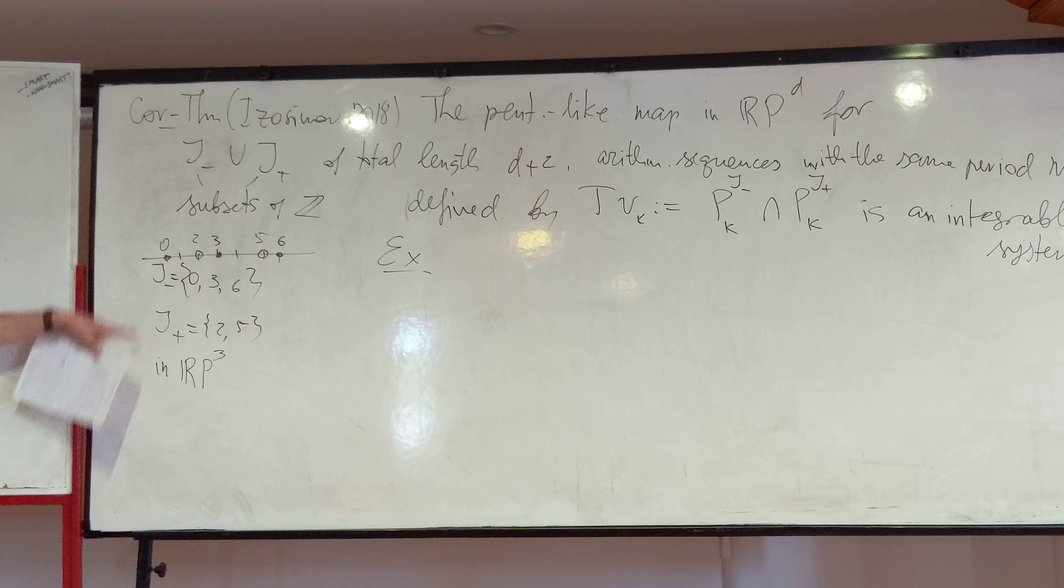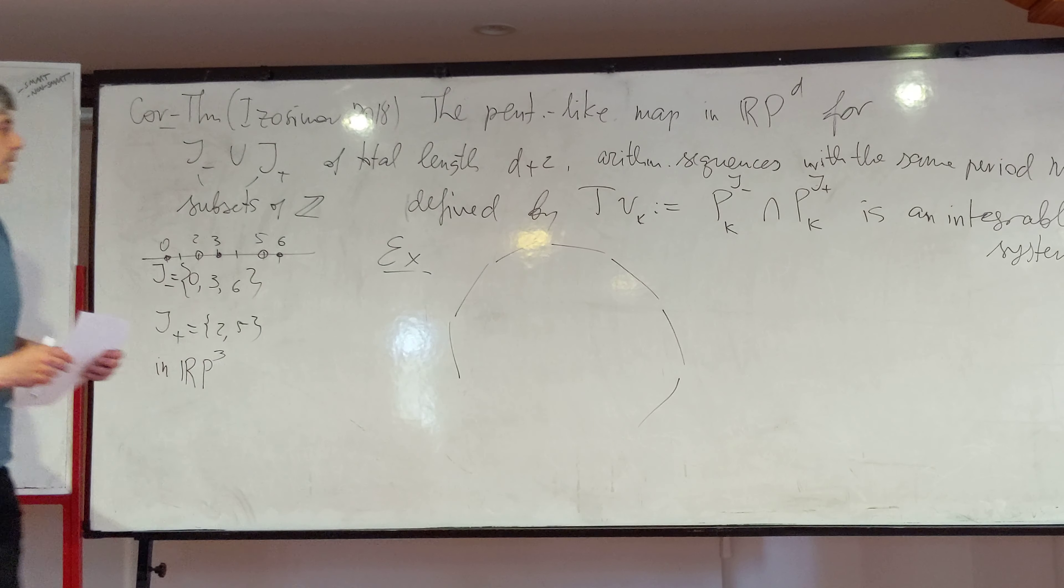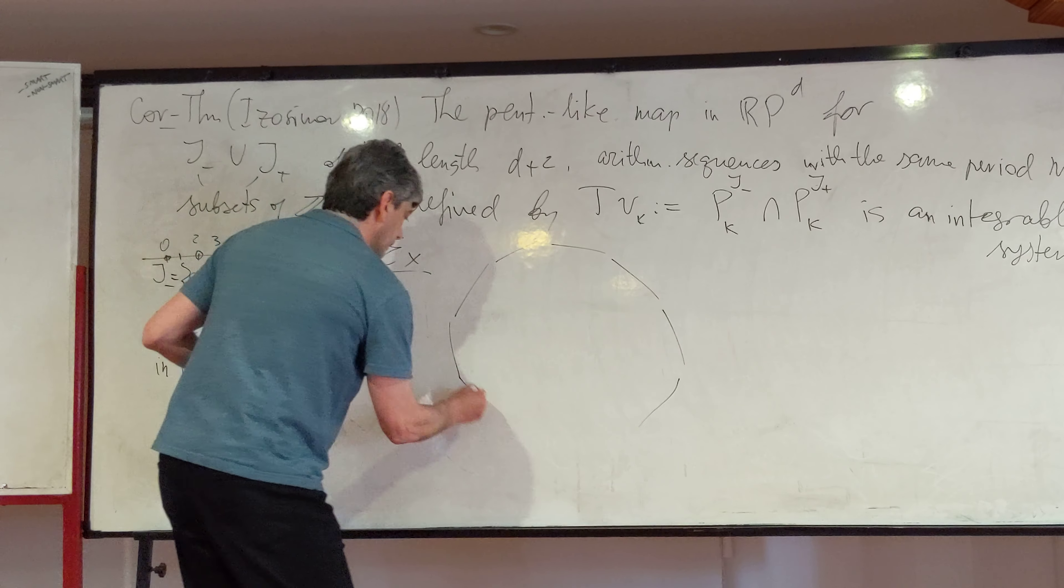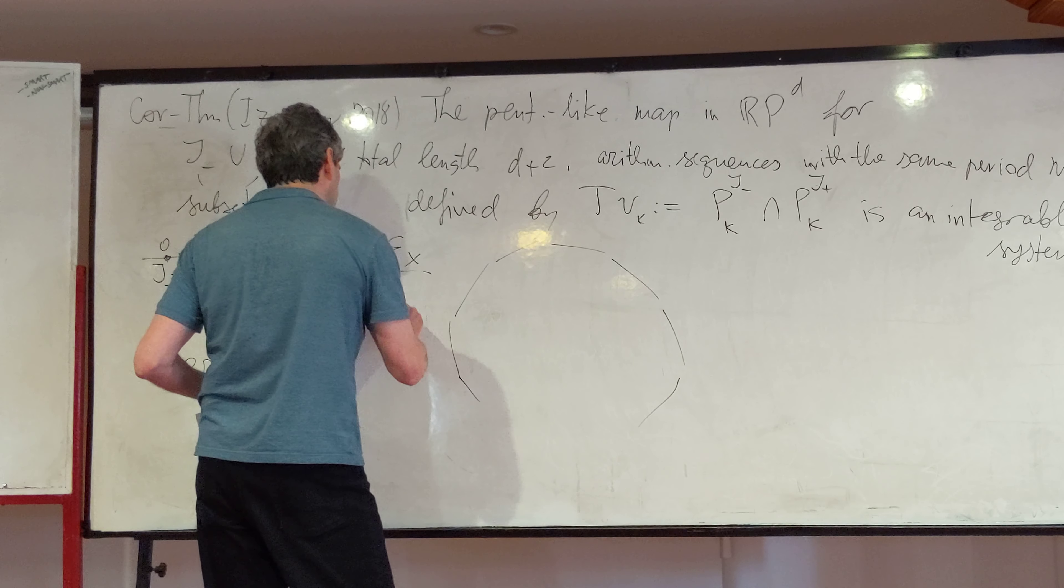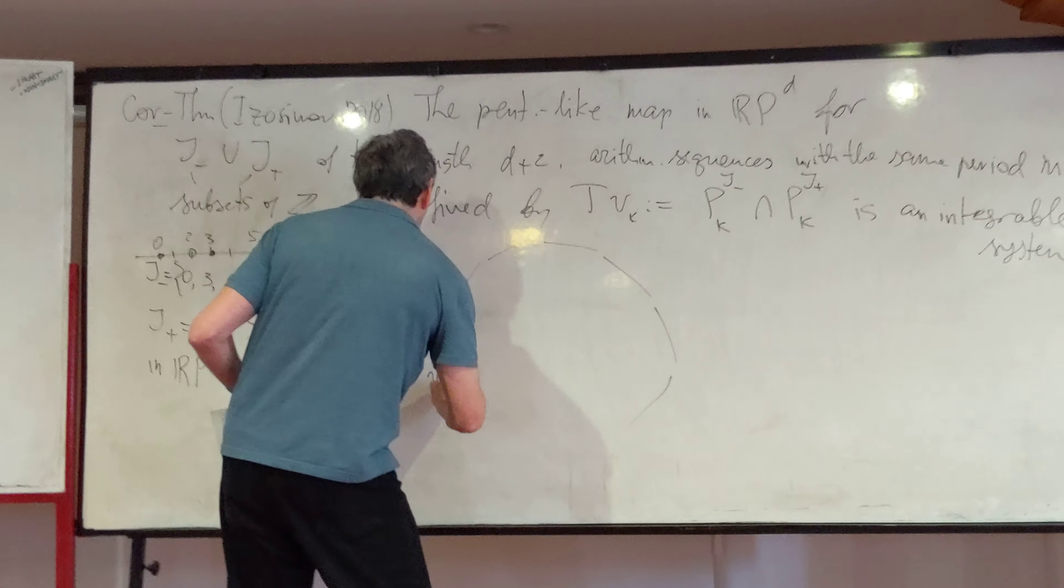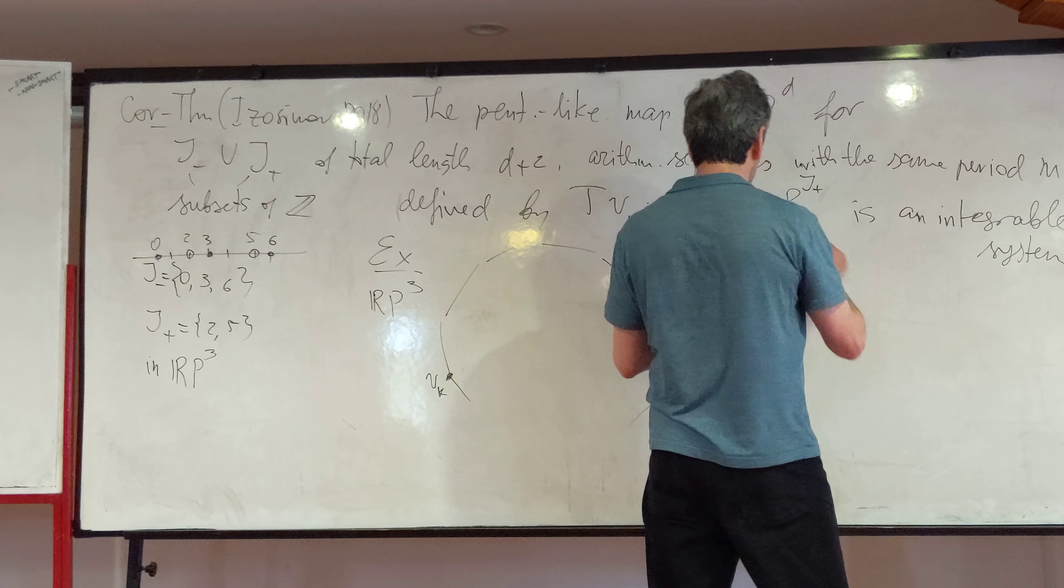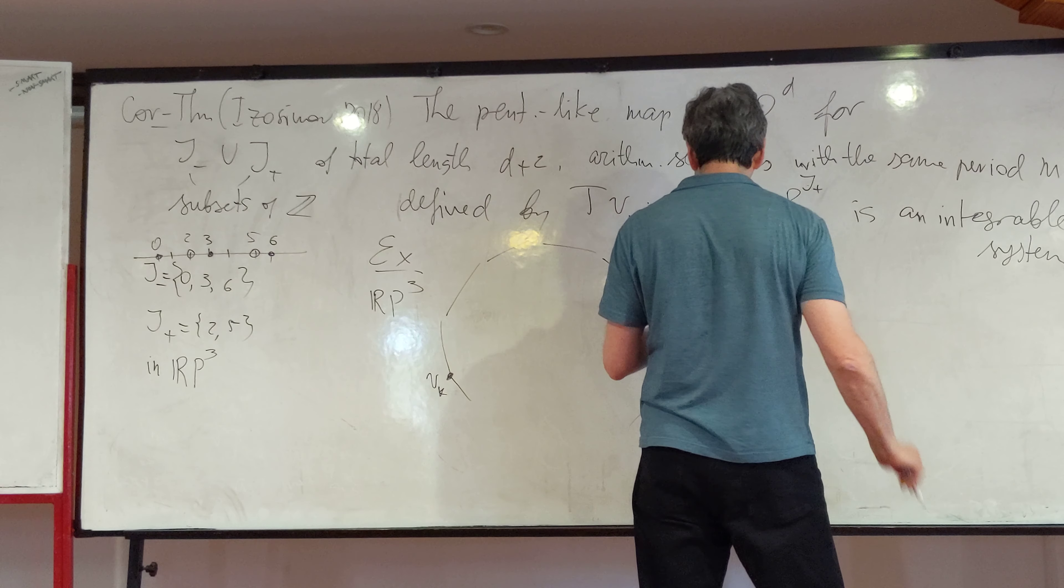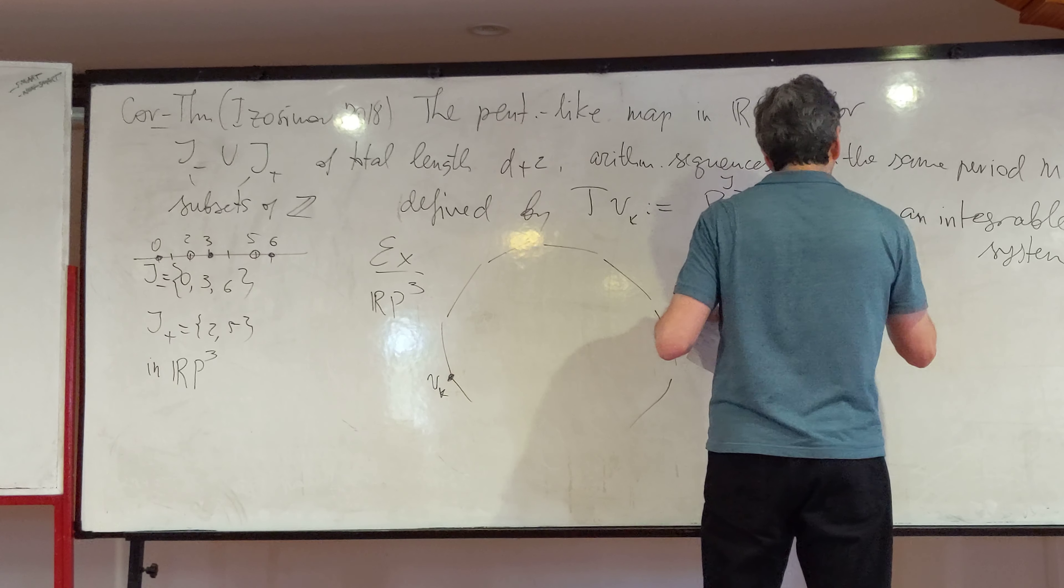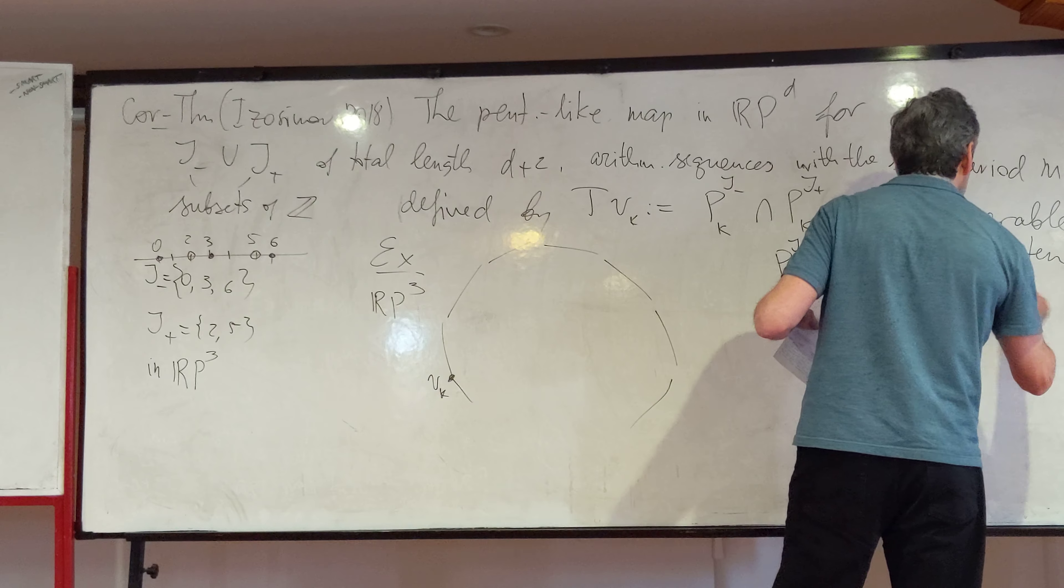So for this case, I start with a pentagram map in RP3. I'll take the vertex with number pk J plus minus is defined by vk plus j, where j belongs to J plus minus.